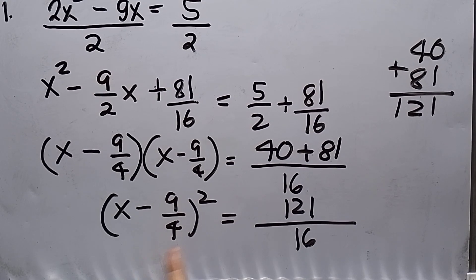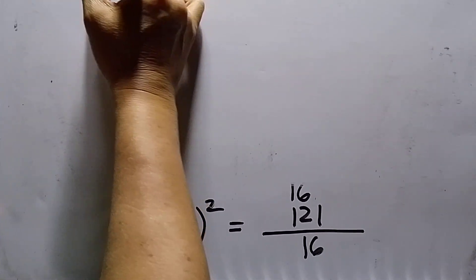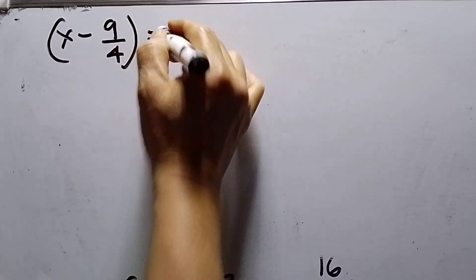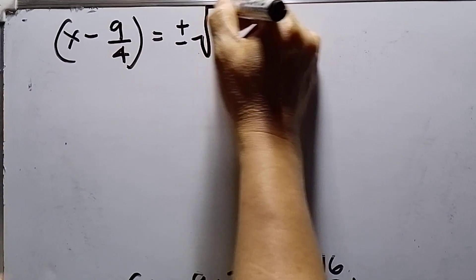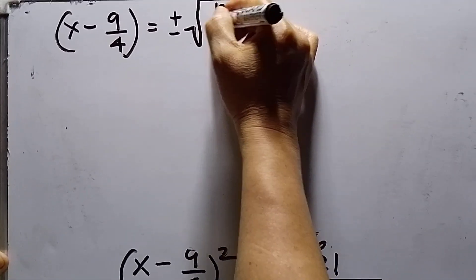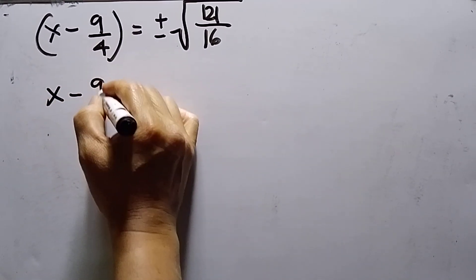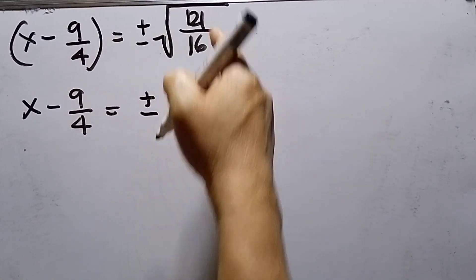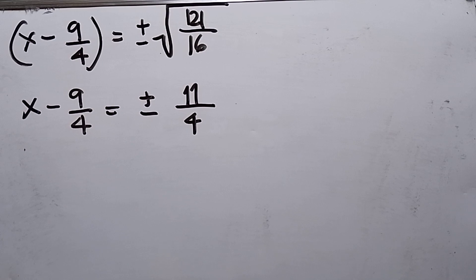Then I need to extract the square, and this will become a square root. So this will be x minus 9 over 4, and I have two values — positive and negative — square root of 121 over 16. So this will be x minus 9 over 4 is equal to plus and minus: square root of 121 is 11, and square root of 16 is 4. So I have two values: positive 11 over 4 and negative 11 over 4.